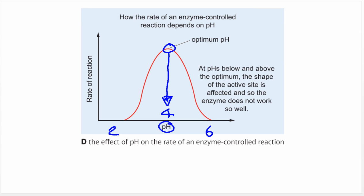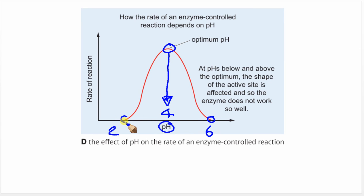At the optimum pH, the enzyme works at its fastest. When the pH increases beyond the optimum, we can see that the rate of reaction slows down, until we come to a point where there is no reaction at all. Similarly, at very low pH on the other side, there is also no reaction at all.